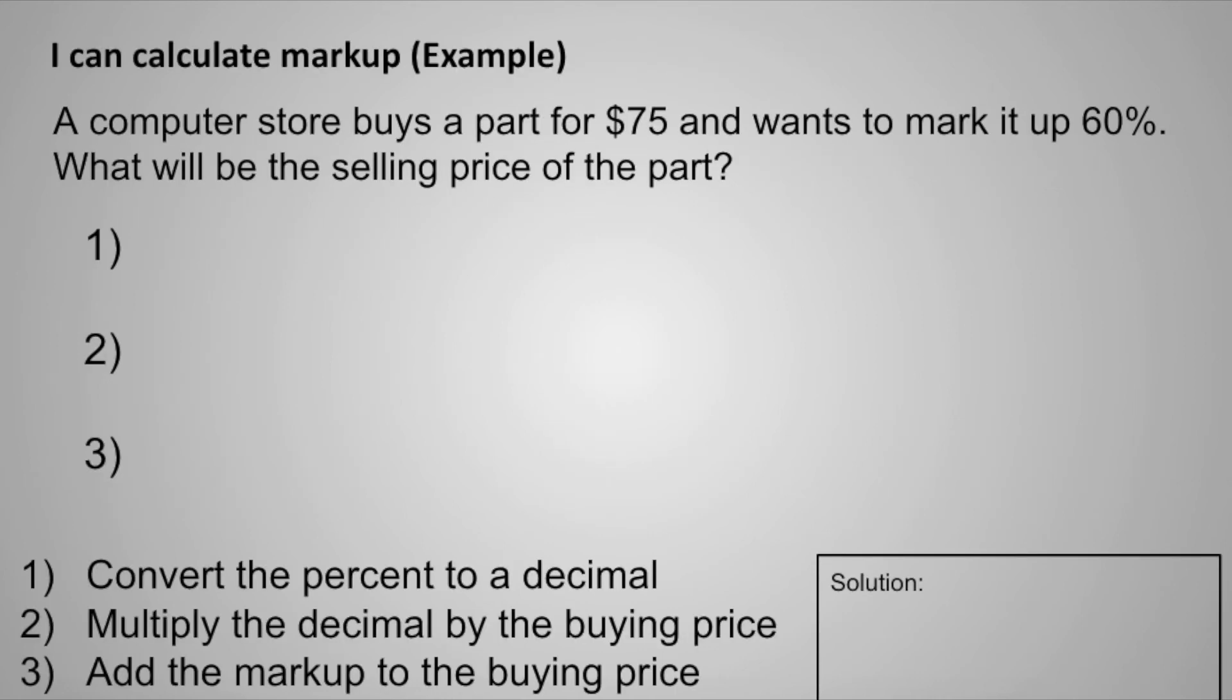Let's take a look at an example. This example reads, a computer store buys a part for $75 and wants to mark it up 60%. What will be the selling price of the part? Step 1 is to convert the percent to a decimal. We can do that by removing the percent sign and then dividing by 100. 60% as a decimal is 0.6. Step 2 is to multiply the decimal by the buying price. 0.6 times 75 is equal to 45, so the computer part is going to be marked up $45.